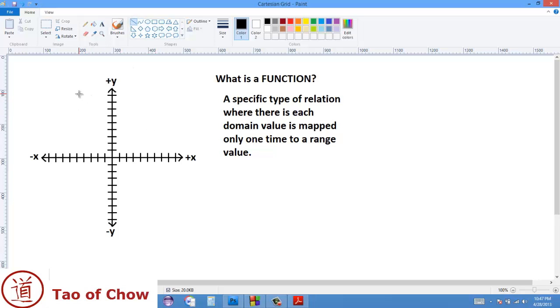So for instance, if I gave a line like this, the purple line here, this would be a function. And the reason why is because if I were to be able to draw a line anywhere along the x-axis going up and down into infinity, it would only contact the relation graph one time. So this line would only contact it once, and this line would only contact it once, and so on and so forth.